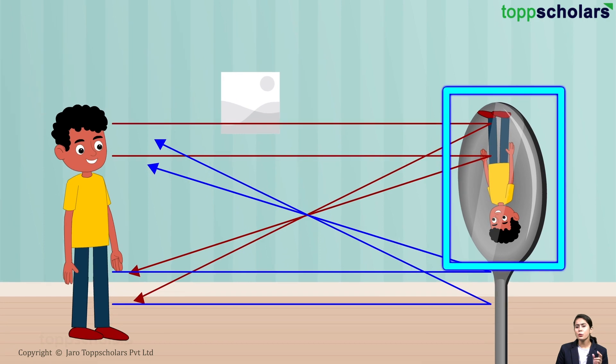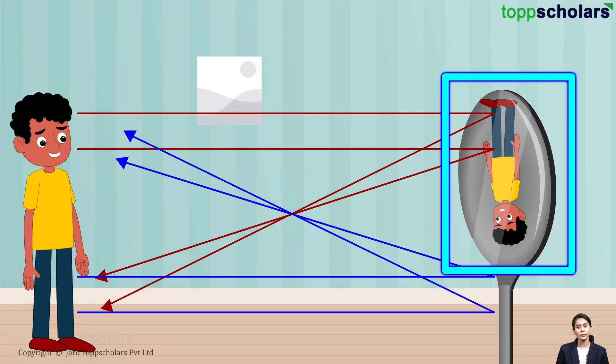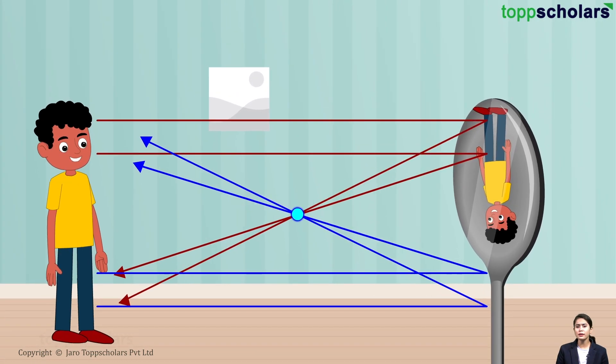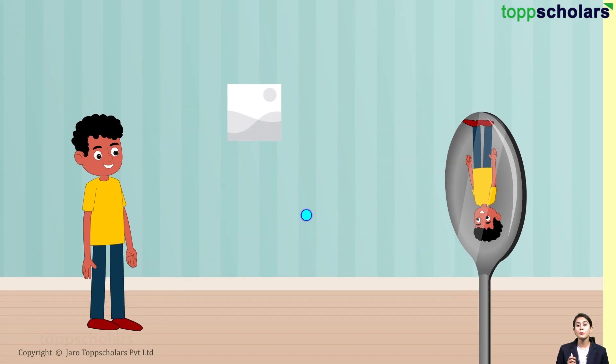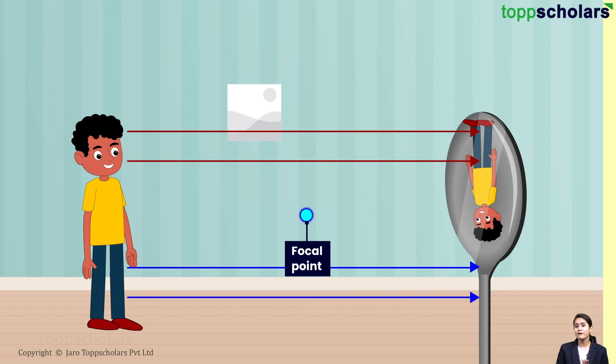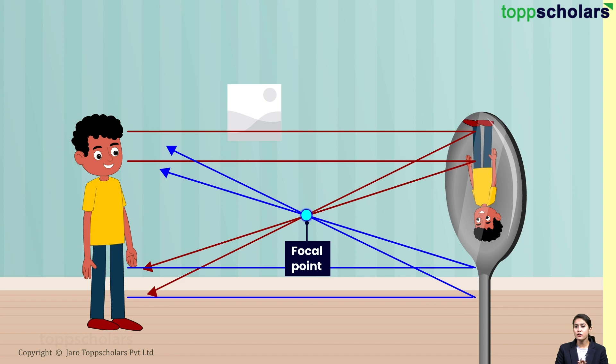Spoon acts as a very small concave mirror. So, its focus is somewhere close. Focus of the mirror is the point where all these light rays meet after reflection. Thus, the light rays have passed the focal point and crossed over before they reach you.